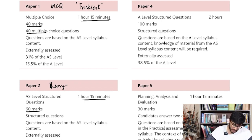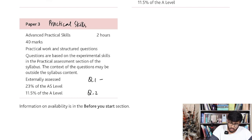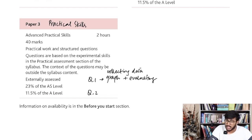Then we have paper three, which is your practical skills. This paper comprises of two questions — question one and question two. Question one involves performing the experiment around six times and plotting a graph. This paper involves collecting data, plotting a graph and evaluating it — like finding out the gradients or the y-intercept from these graphs and then determining the unknown variables of the equation.